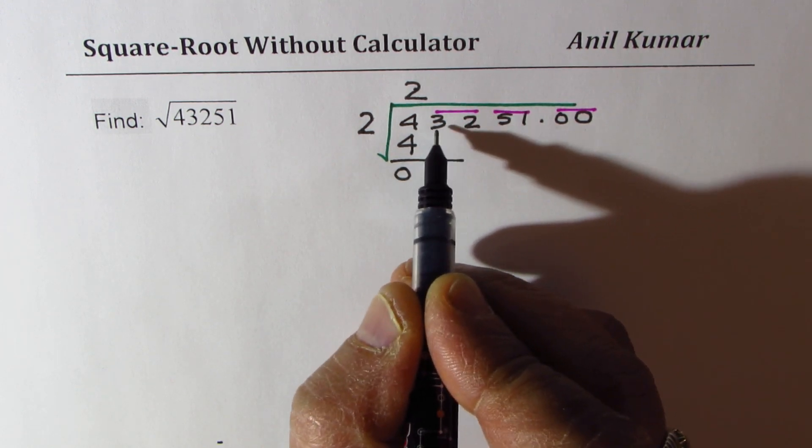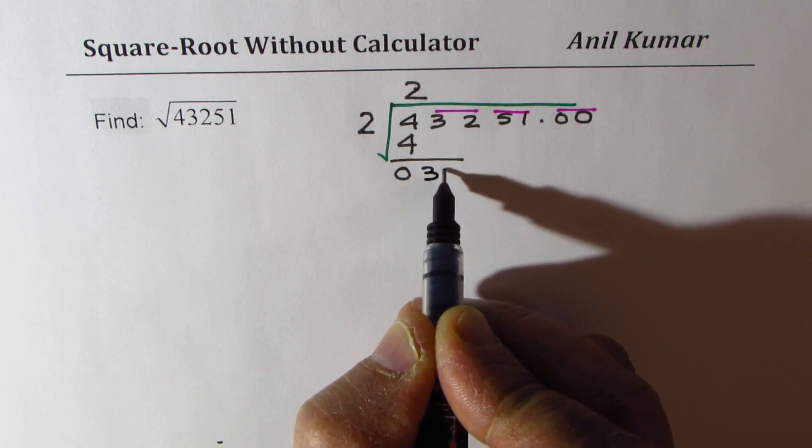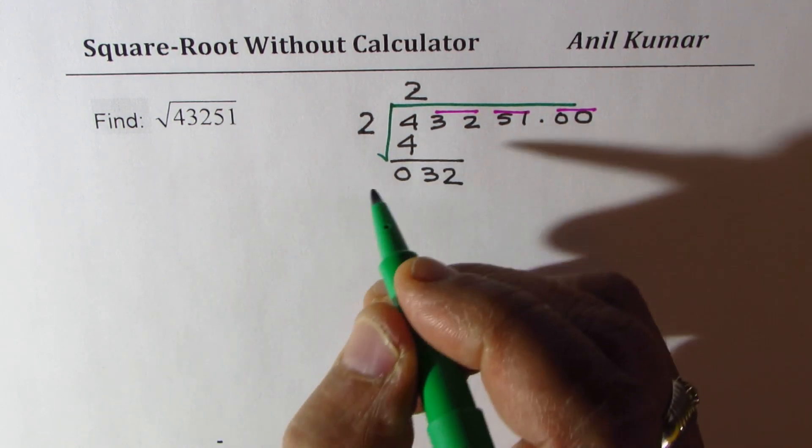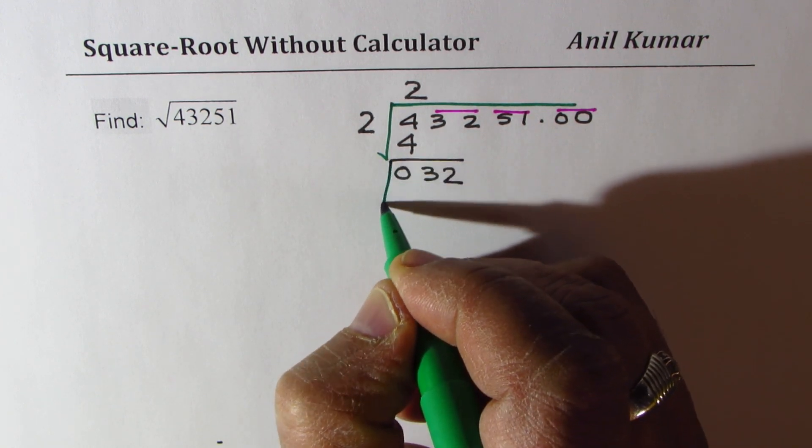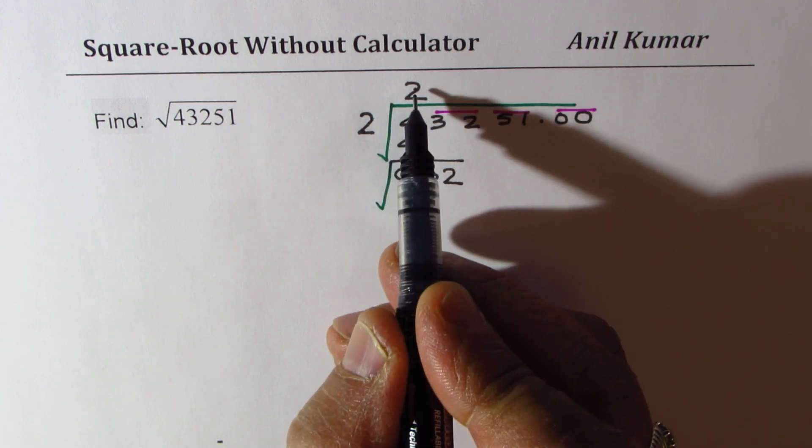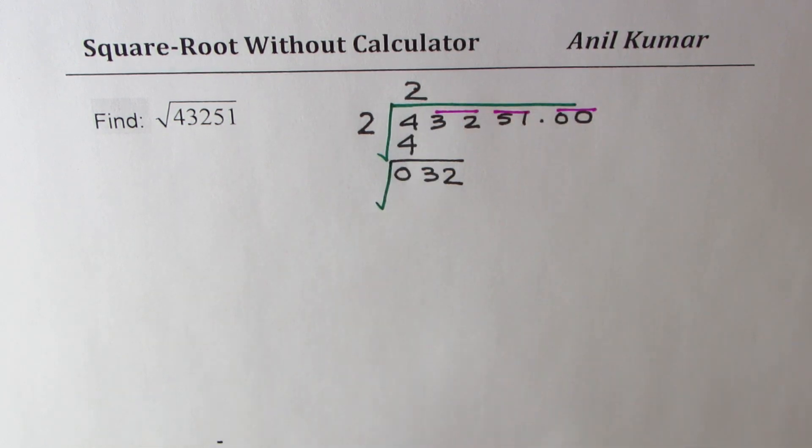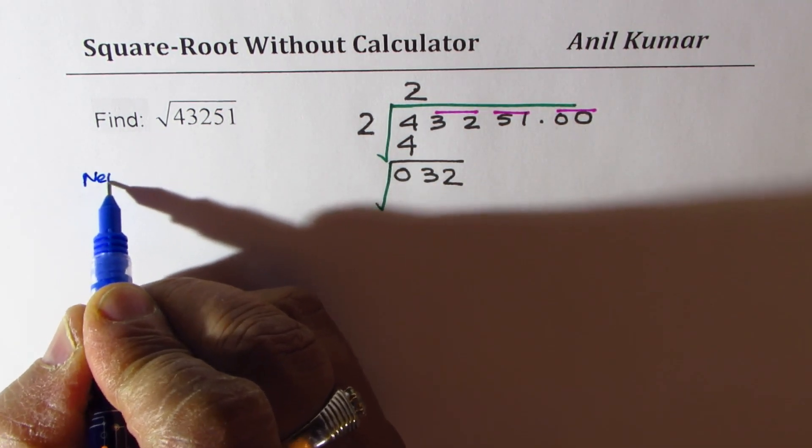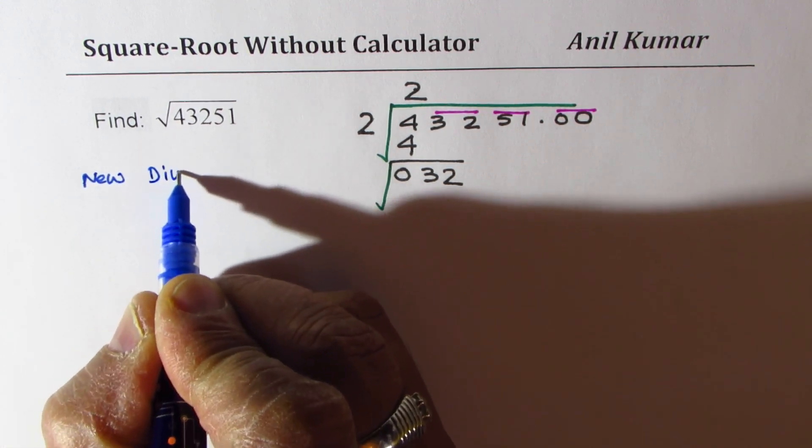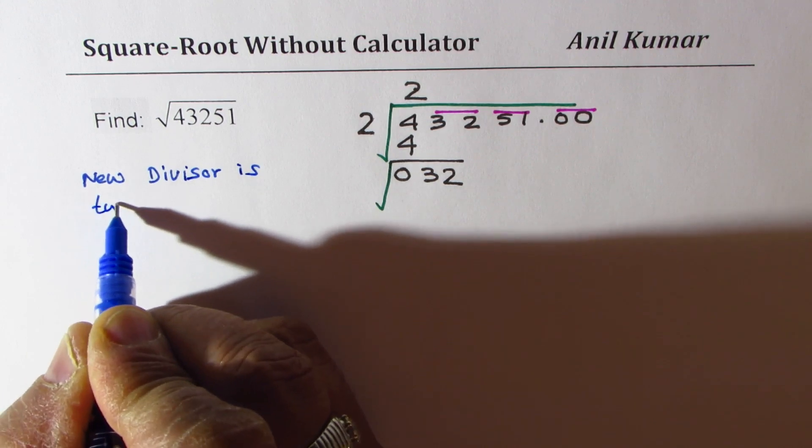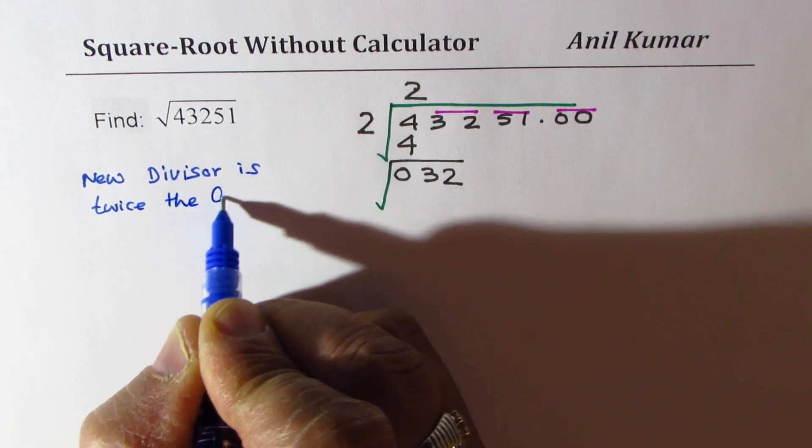Now in the next step we are going to again divide, but this time by a different number. The number which is placed is twice the quotient. Let me write here: new divisor is twice the quotient.